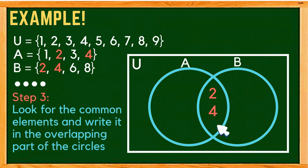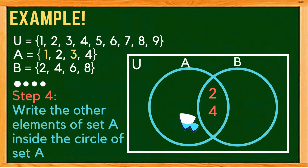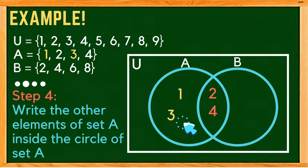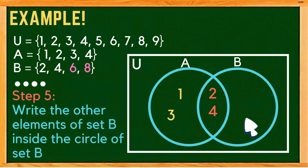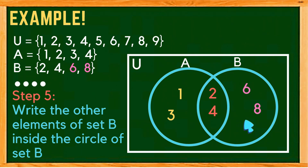Step 4: write the remaining elements of set A inside the circle of set A. These are the elements 1 and 3. After that, write the remaining elements of set B inside the circle of set B. These are the elements 6 and 8.